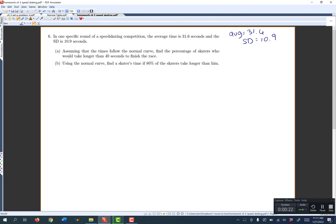Now, assuming that the times follow the normal curve, so we get to assume it's a normal curve. That means we can use the normal curve formulas from chapter 5. Find the percentage of skaters who would take longer than 40 seconds to finish the race. So we're looking for a percentage.